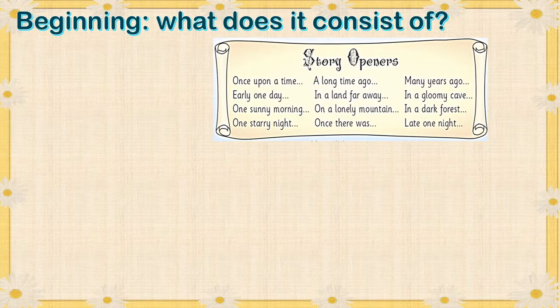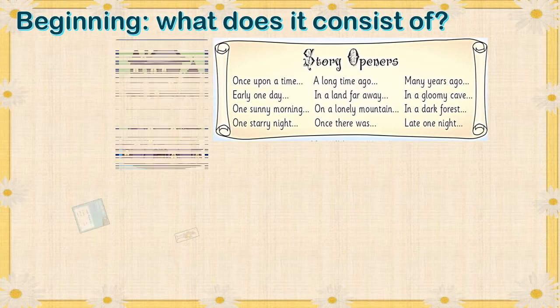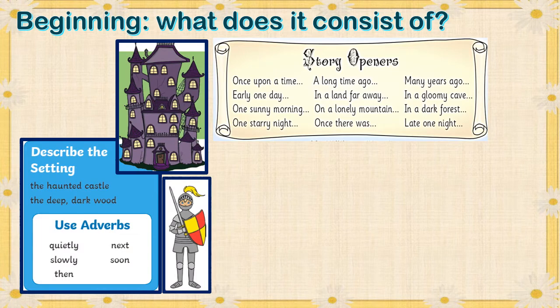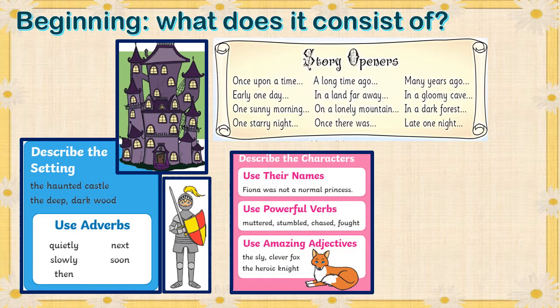I'm going to have this on the slide so you can use it when you start writing your story. You have to describe your setting using adjectives and adverbs — whatever your place is, use the appropriate describing words. When you add your characters, you can use adverbs because they will be doing things. When describing your character, give them names — try to use creative names and not just ordinary everyday names if possible.